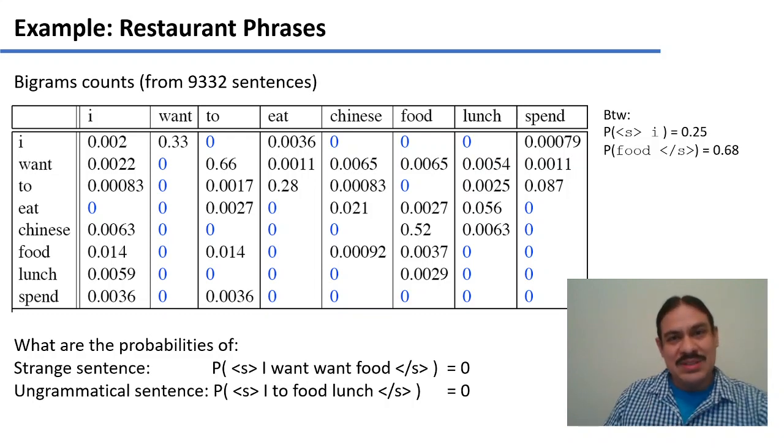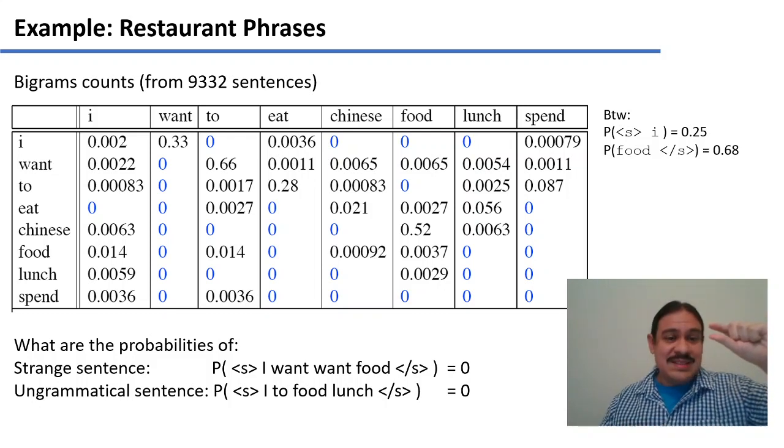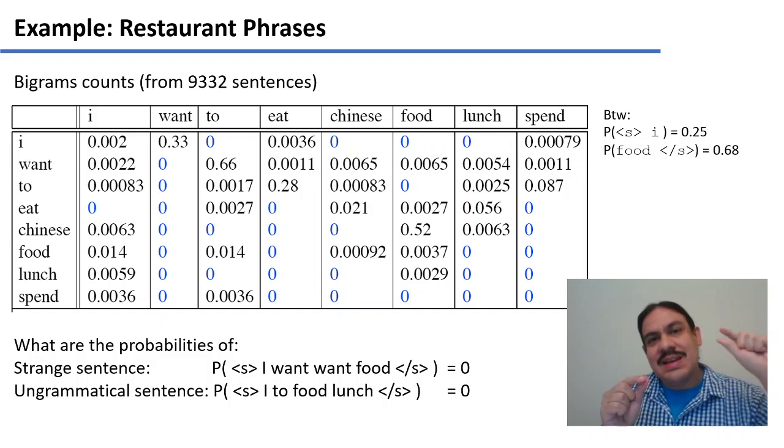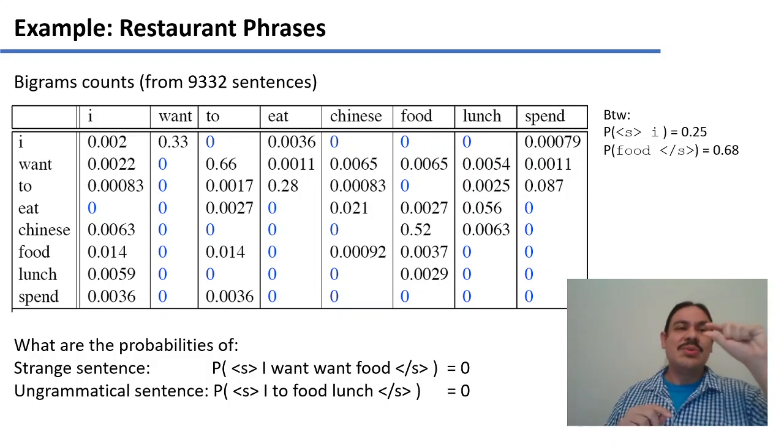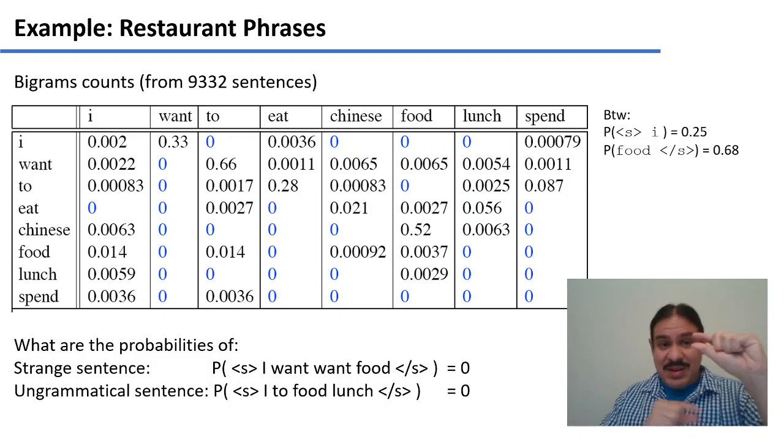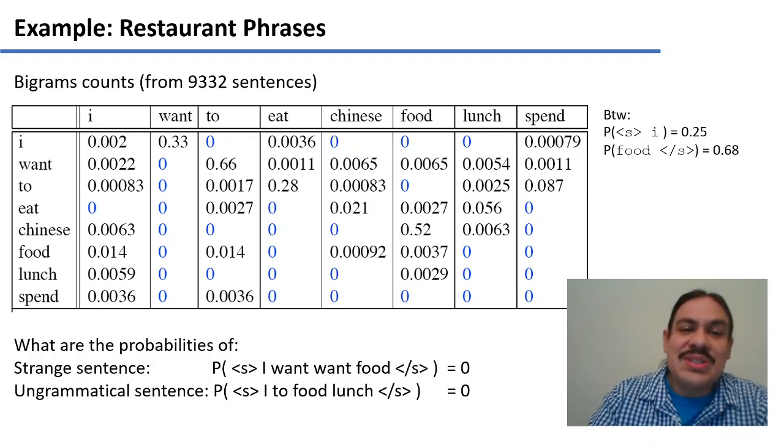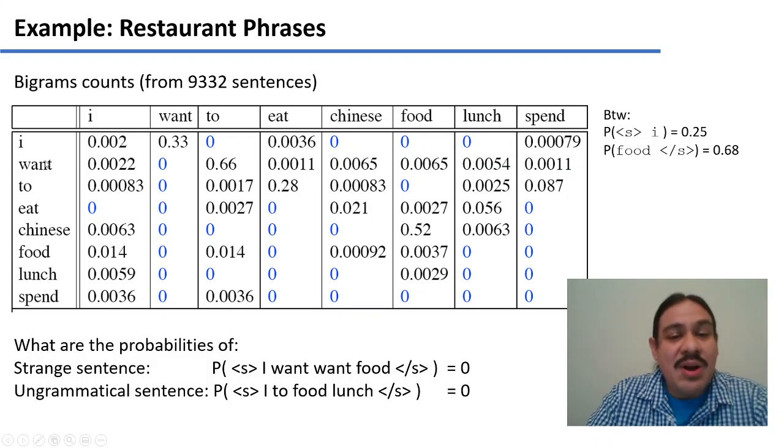We're still missing one step, which is what we'll be doing in the next video, which is how do we distinguish normal and common sentences and ungrammatical sentences from strange or unseen sentences. There might be sentences that are okay, but that we just don't have in the corpus. So there's sentences that you see very often in the corpus, sentences that are ungrammatical, and somewhere in the middle you have sentences that you either never saw but are possible or sentences that are a little strange but still admissible, such as I want one food, which is an okay sentence of English, but this model will incorrectly predict that the probability of that sentence is zero.